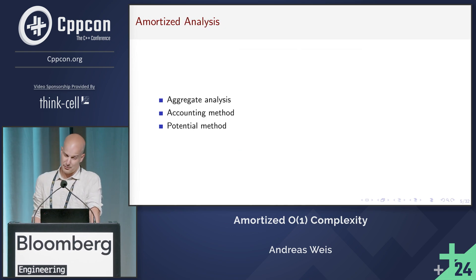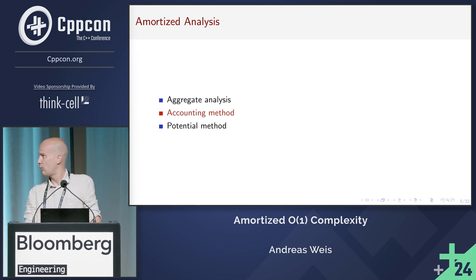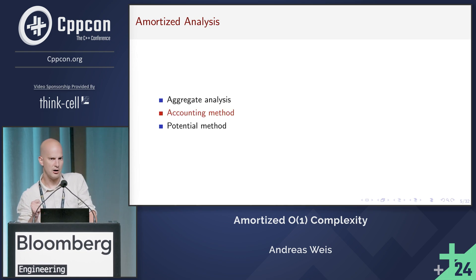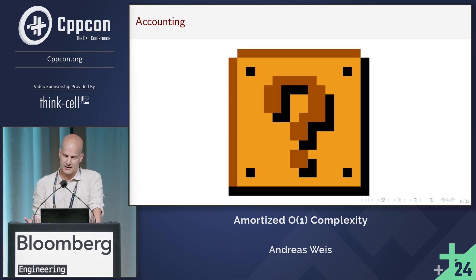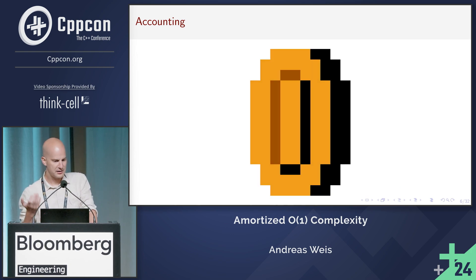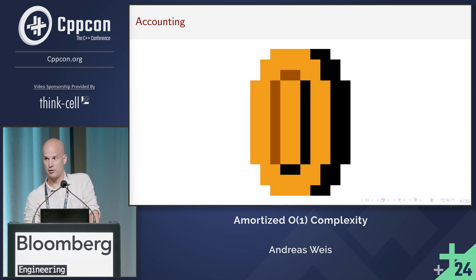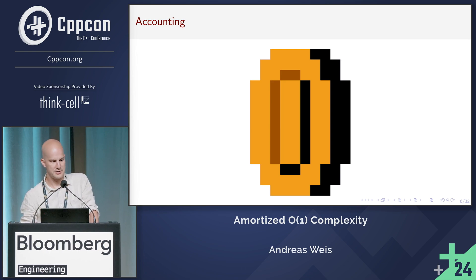Cormen discusses three different methods, and we're going to go with accounting, because that's by far the coolest of the three. So what's accounting all about? Coins — it's about coins. We use those coins to pay for computational steps, and the number of coins required is a measure for the complexity.